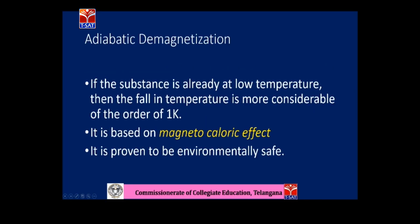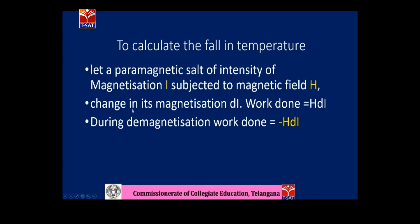If a substance is already at a low temperature, the fall in temperature is more considerable, of the order of 1 Kelvin. This is based on the magneto caloric effect — the interdependence of the magnetic field and the thermal effect. Magnetic and thermal effects together produce the magneto caloric effect. This method of adiabatic demagnetization is also proved to be environmentally safe, as no chemicals are used.